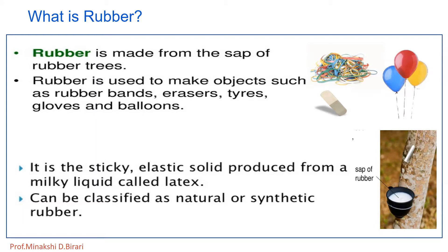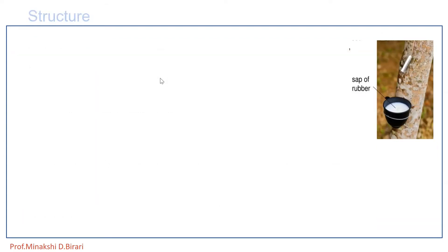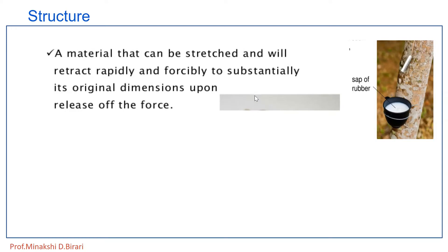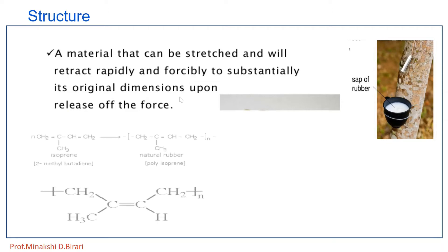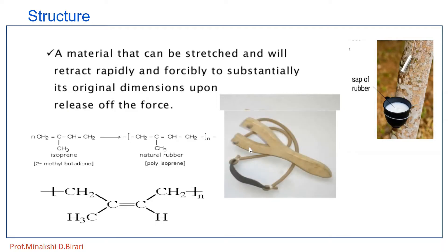A material that can be stretched and will retract rapidly and forcibly to substantially its original dimensions upon release of the force is called rubber. When we observe the structure, we find isoprene units — these monomer units undergo polymerization to give natural rubber, that is polyisoprene. Natural rubber consists of repeating units of isoprene, having the name 2-methyl-1,3-butadiene, joined to each other in cis geometry.